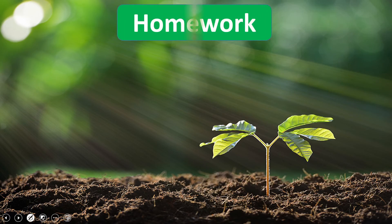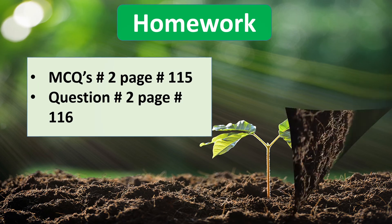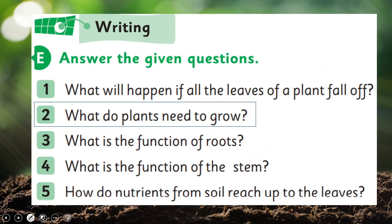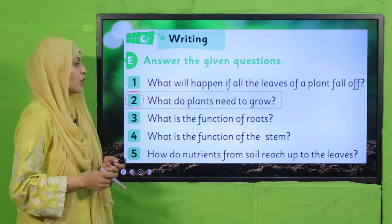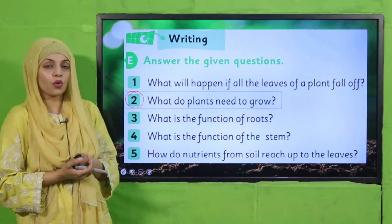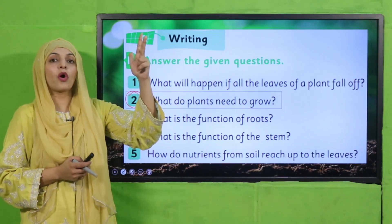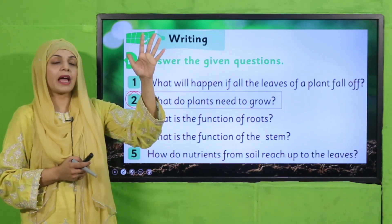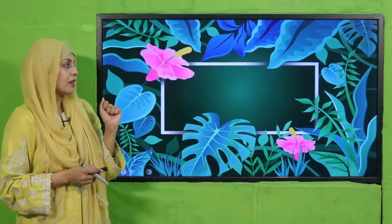My dear students, now is the time for homework. For homework you will do MCQ 2 given on page number 115, and you will do question number 2 given on page number 116. Ye wala jo question hai, wo notebooks pe karenge: What do plants need to grow? They need five things — soil, air, water, sunlight and temperature. The MCQ will be done in the books.